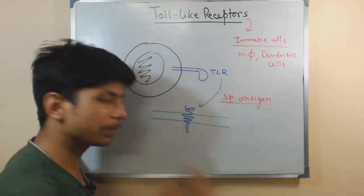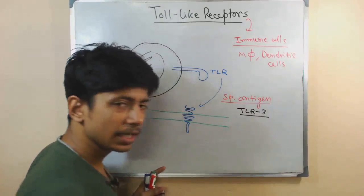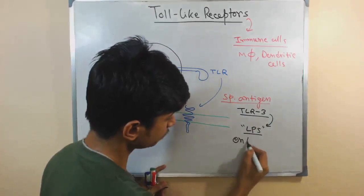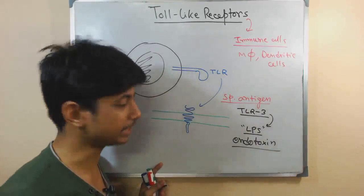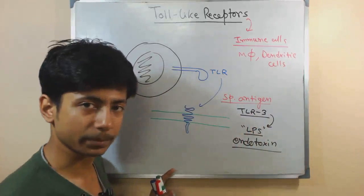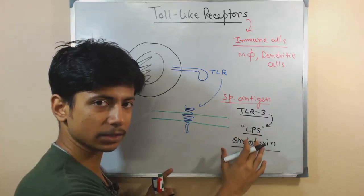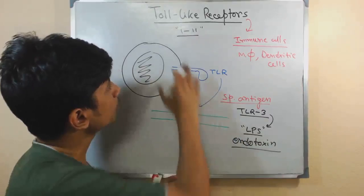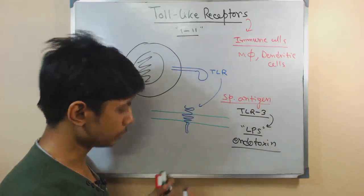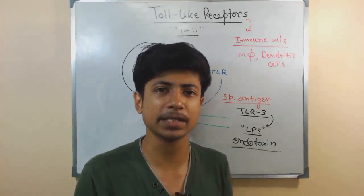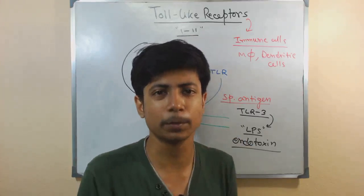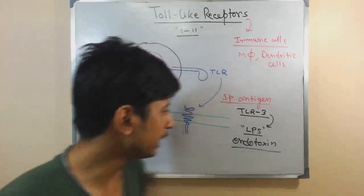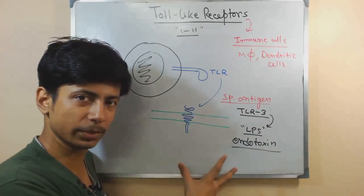For example, Toll-like receptor 3 detects the antigen LPS, or lipopolysaccharide, which is a potent antigen — a kind of endotoxin secreted by gram-negative bacteria. There are many varieties of Toll-like receptors, from TLR1 to TLR11 or even more newly discovered. These different TLRs detect different types of antigens: some detect viral capsids, some detect LPS, and some detect flagellin — the protein of bacterial flagella. Since our body has no flagella of that kind, TLRs can specifically recognize bacterial flagella as foreign.